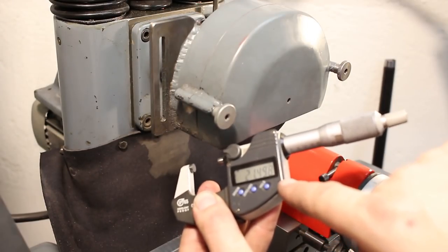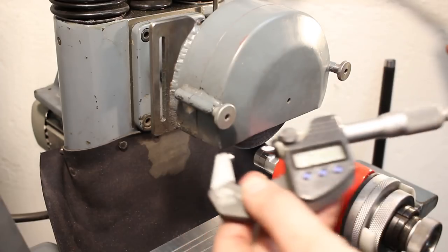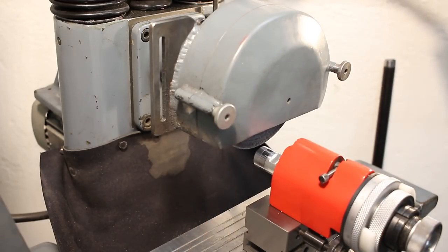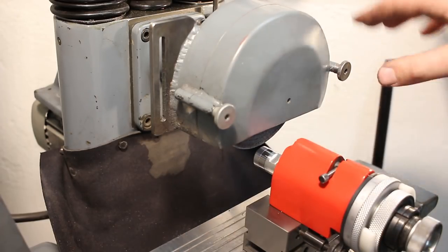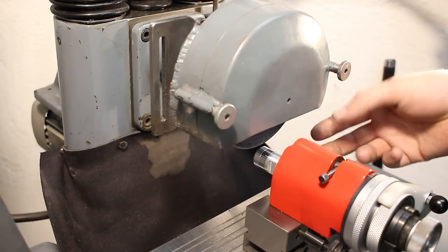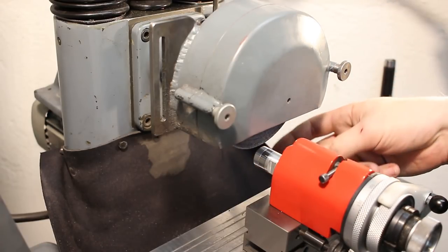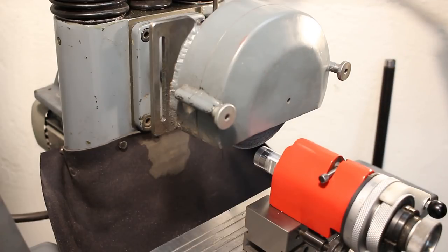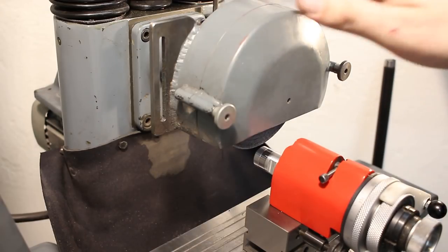There we go, 21.49. Grinding with the surface grinder to this kind of tolerance on such a small increment, this is really hard because the down feed is a bit jerky on this machine.